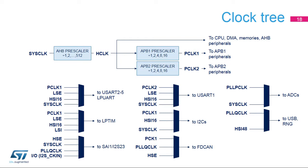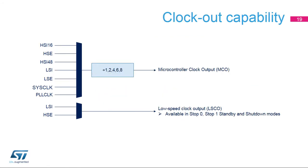The AHB prescaler divides the system clock to obtain the AHB clock or H-clock. APB clocks, called P-clock 1 and P-clock 2, are obtained by applying a programmable prescaler ratio to H-clock. This slide describes the multiplexers in charge of selecting the clock of various peripherals. The ADC clock is derived from the system clock or from the PLL-P output; this PLL-P clock has no other usage. The various clocks can be output on an I/O pad. The microcontroller clock output feature enables the external output of one of seven clocks: HSI16, HSI48, HSE, LSI, LSE, SIS clock, and PLL clock.